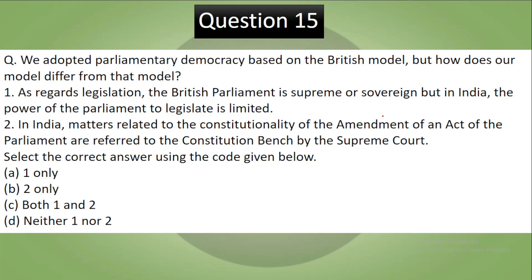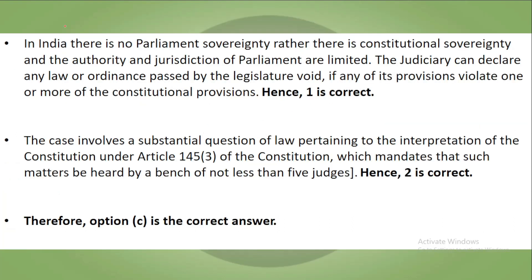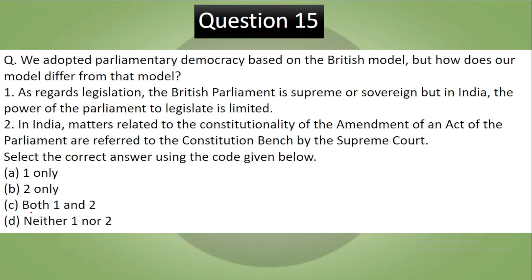The correct answer is C — both statements are correct. In India, there is no parliamentary sovereignty; rather, there is constitutional sovereignty, and the authority of Parliament is limited — it cannot go beyond the basic structure of the Indian Constitution. Under Article 145 of the Constitution, cases involving a substantial question of law pertaining to interpretation of the Constitution must be heard by a bench of not less than five judges.